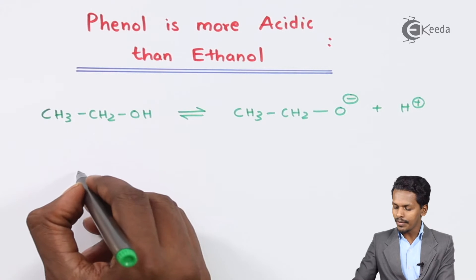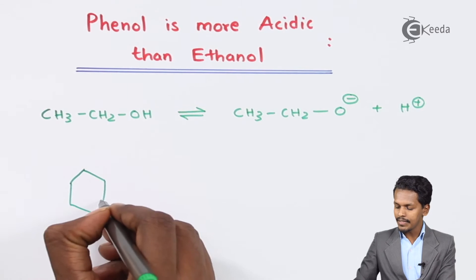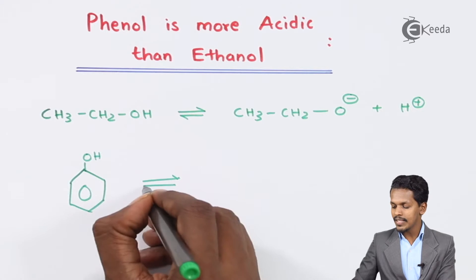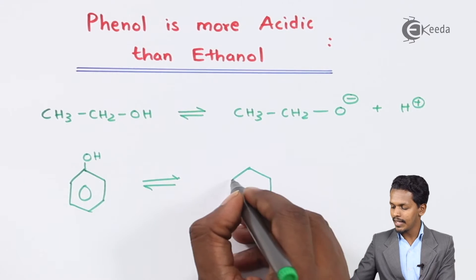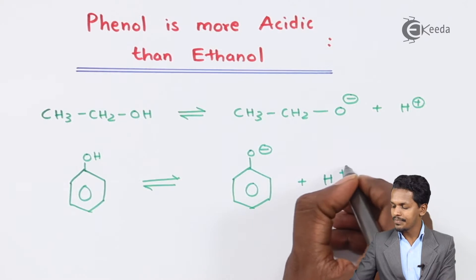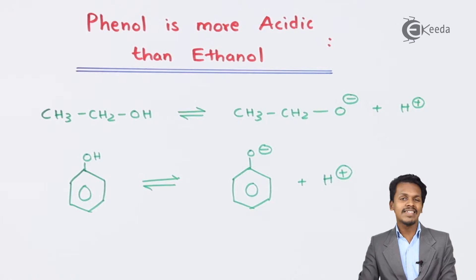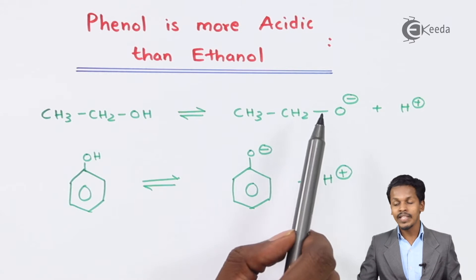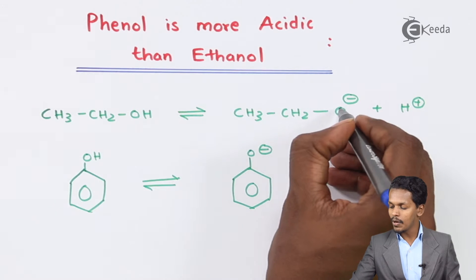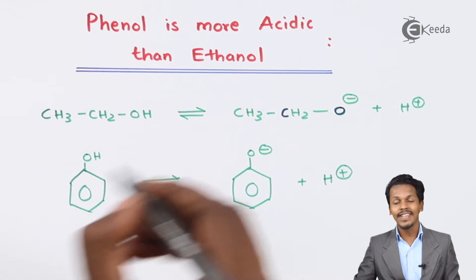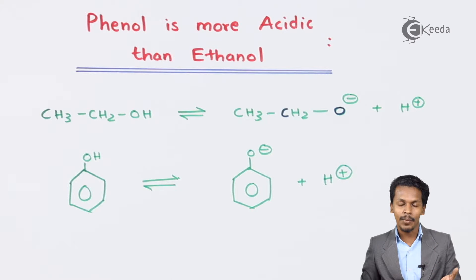If we talk about Phenol, when Phenol ionizes it will ionize in the form of Phenoxide ion, along with H+ ion. But there is still a difference. Both have the tendency to lose H+ ion, but in the ethoxide ion, the oxygen atom is attached to CH2, which is an SP3 hybridized carbon atom.